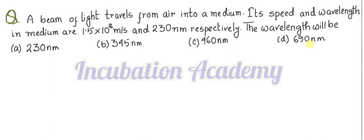Welcome everyone. The question on the screen is a CBSE previous year question from 2023. A beam of light travels from air into a medium. The speed and wavelength in the medium are 1.5 into 10 to the power 8 meter per second and 230 nanometer respectively. What will be the wavelength of the light in air? The options are 230 nanometer, 345 nanometer, 460 nanometer, and 690 nanometer.